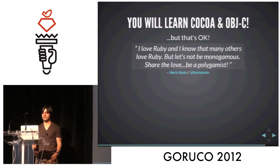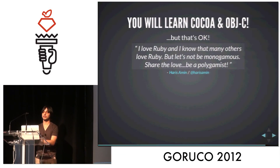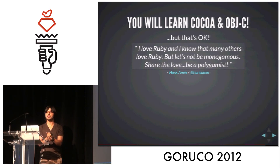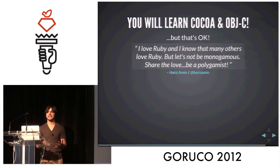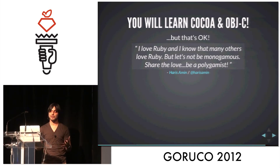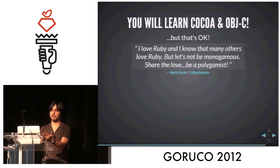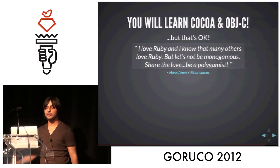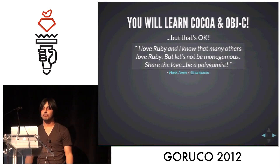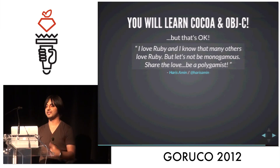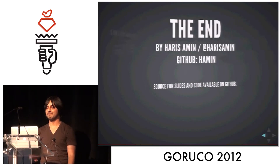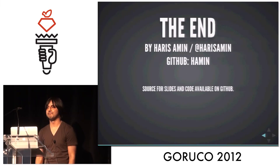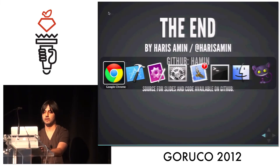Last thing — this is what you guys should take away. You will learn Cocoa, and you will learn Objective-C just because you're dealing with those APIs, but there's nothing wrong with it. This is my code. I love Ruby, and I know that many others love Ruby, but let's not be monogamous. Share the love. Be a polygamist. And that's it. Thank you.